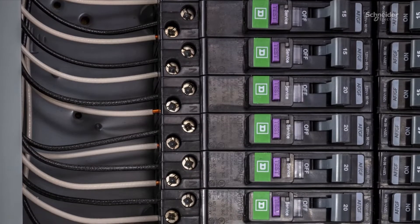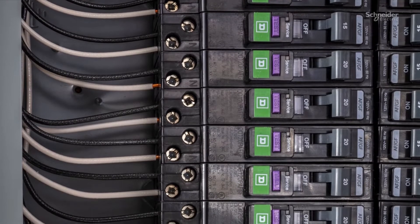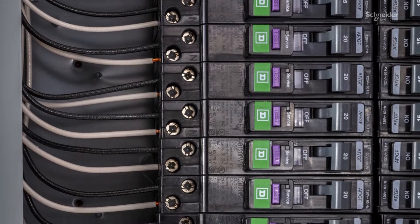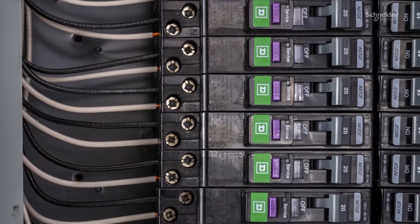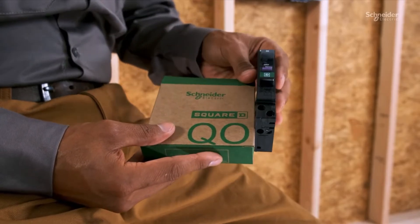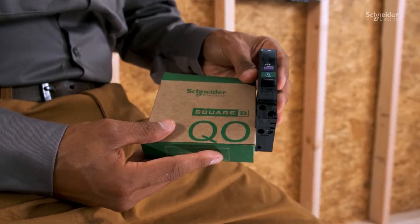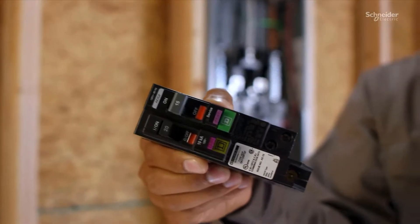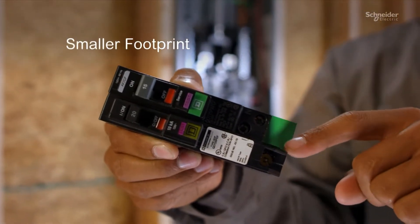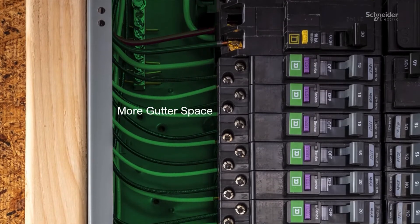That's why we've updated our arc fault and dual function circuit breakers with features designed to save you time and money. New QO arc fault and dual function circuit breakers are faster and easier to install, complete with a shorter footprint to provide more space for wiring.